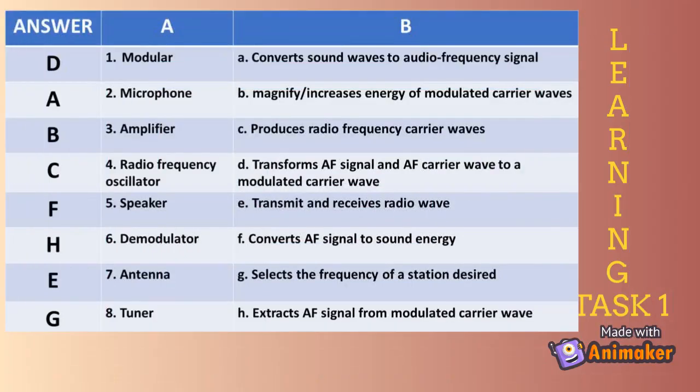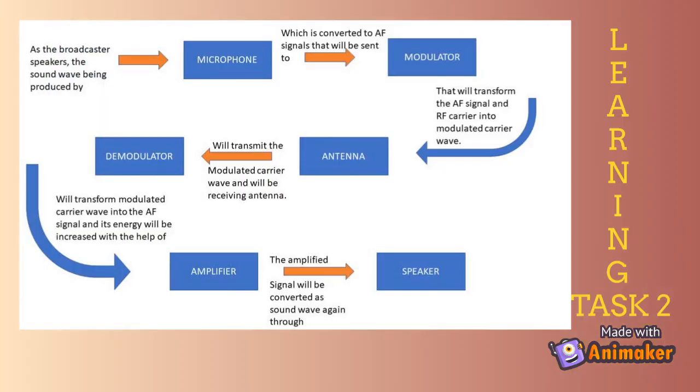Let's do learning task number one: match the equipment in column A with its proper function in column B. Learning task number two: using the words inside the box, complete the flowchart showing the processes of radio broadcasting and communication.